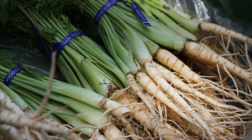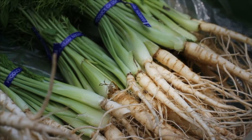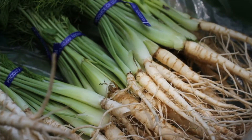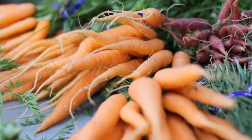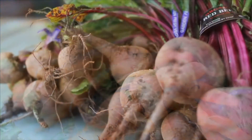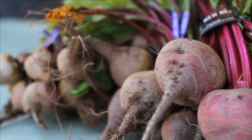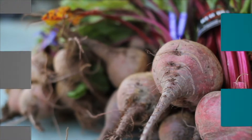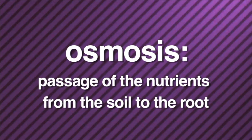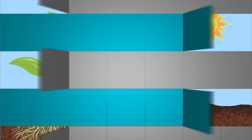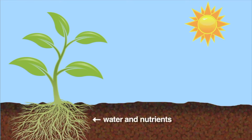If you take a look at these plant roots, you'll see little hair-like things. They are actually called root hairs. Root hairs are important because they allow the plant to make more contact with the soil. They give the plant the ability to increase the amount of water and nutrients it can take in. Osmosis is the passage of the nutrients from the soil to the root. Once the water and nutrients are taken in by the roots, they are transported to the rest of the plant through the stem.